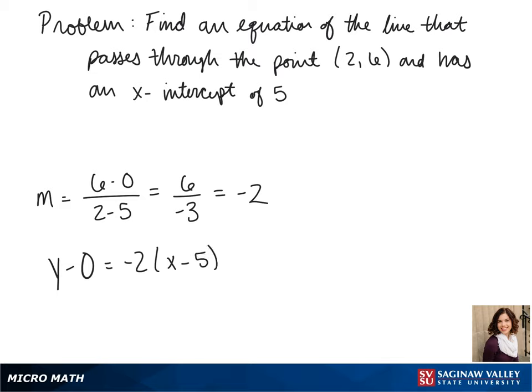To get this in slope-intercept form, we have to distribute our negative 2 and get y by itself. But y is being subtracted by 0, so it already is by itself. We get y equals negative 2x plus 10 as our equation.